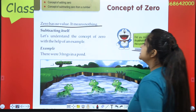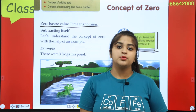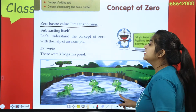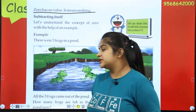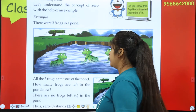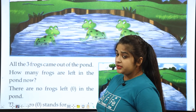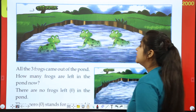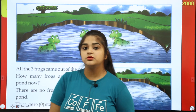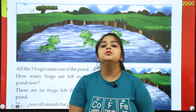Let's understand the concept of zero with the help of an example. There were three frogs in a pond. All three frogs came out of the pond. How many frogs are left in the pond now? Zero.